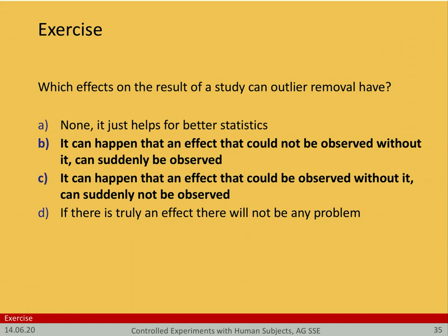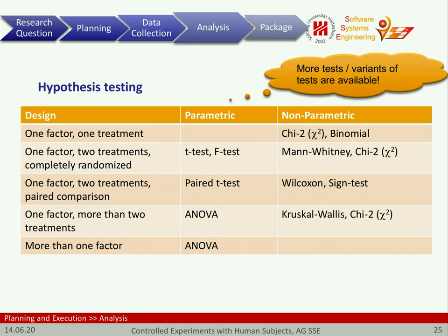Option C can also be true: an effect that could be observed without outlier removal can suddenly not be observed after removal. We might have a statistical relationship that, by removing the outliers, is no longer as strong. In this case, the outlier made the effect we would expect stronger than it was after removal. Option D, unfortunately, is also not true.